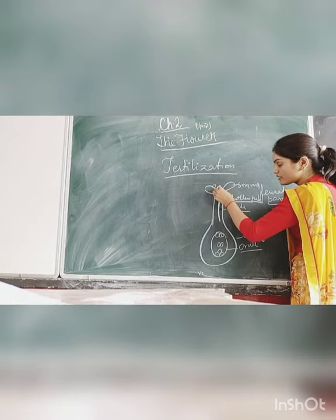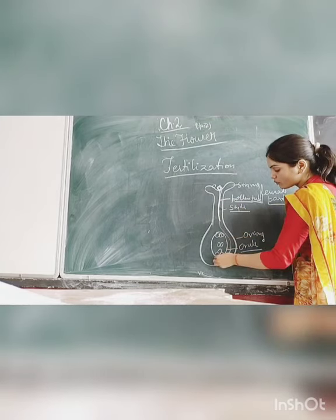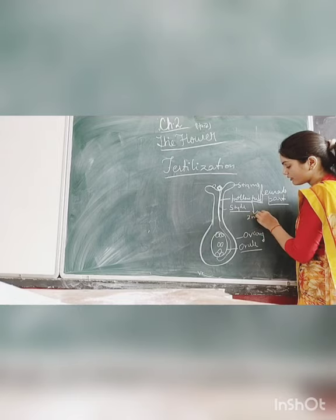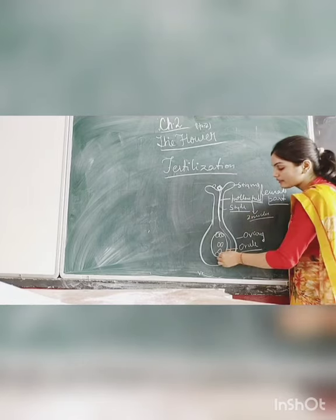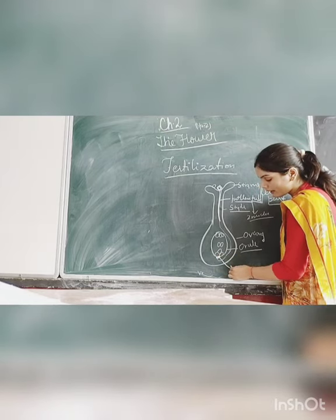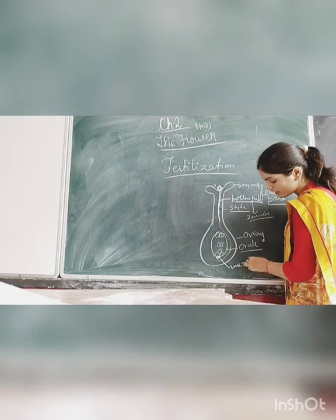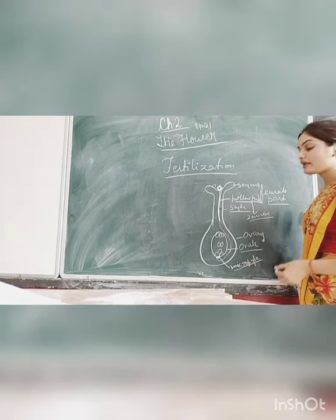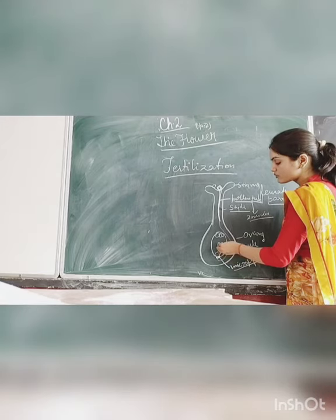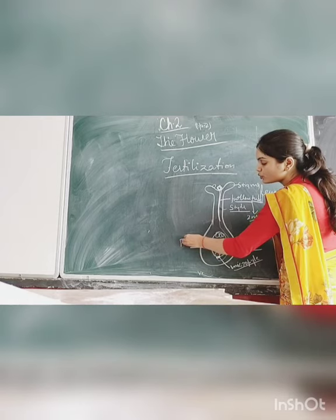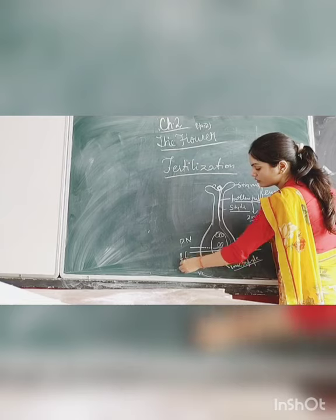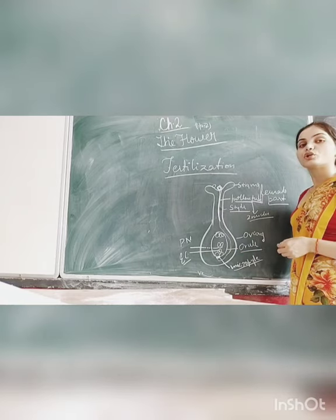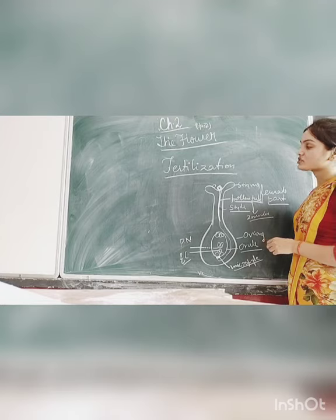When the pollen grain penetrates inside the ovary, it goes inside the ovule. One pollen grain contains two nuclei, and they enter through a pore known as the micropyle — a structure through which the male gamete enters the ovary. Inside, you will see two polar nuclei and an egg cell. The male gamete fertilizes the egg cell and polar nuclei. This is the process of fertilization in a flower.